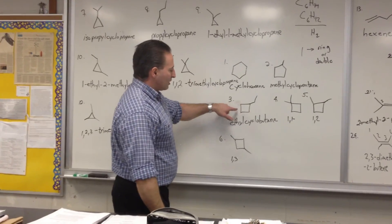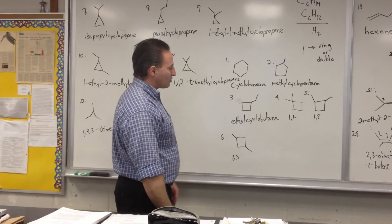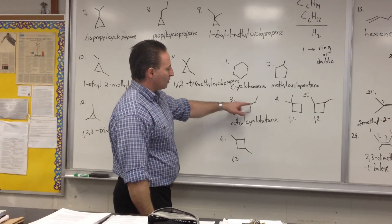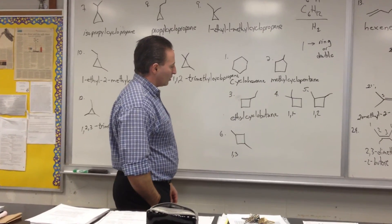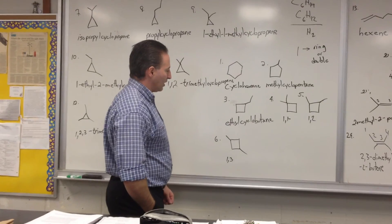The next possibility is a 4-membered ring, but with 2 extra carbons to play with. The first and most logical molecule we should name is ethylcyclobutane.